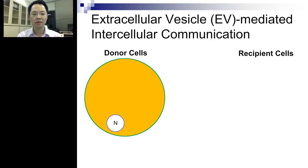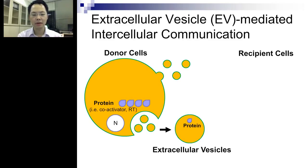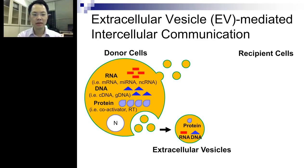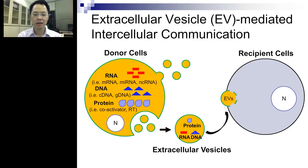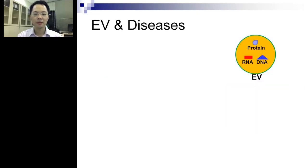As shown in this schematic, donor cells release vesicles either through fusion of the multivesicular body to produce exosomes, or by budding from the membrane. Scientists have found these vesicles carry cargo including proteins, DNA, and RNA. When vesicles reach recipient cells, they offload this cargo, affecting recipient cells through direct protein-ligand-receptor interaction or, more recently recognized, by delivering microRNA to manipulate gene expression.